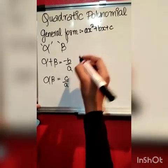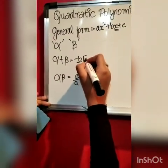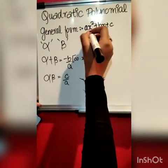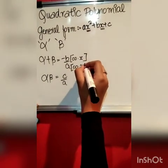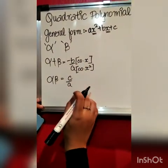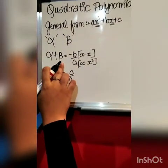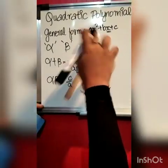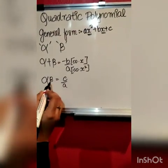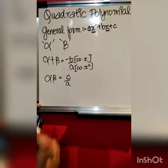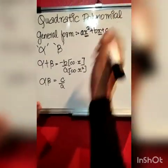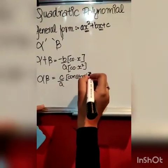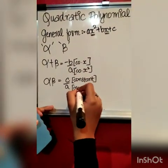What is minus b? Minus b is a coefficient of x. And what is a? a is a coefficient of x². This is the sum of alpha and beta: minus b by a, where minus b is a coefficient of x and a is a coefficient of x². Alpha into beta, we will get that as c by a. What is c? c has no x, so it will be a constant. And what is a? The coefficient of x².